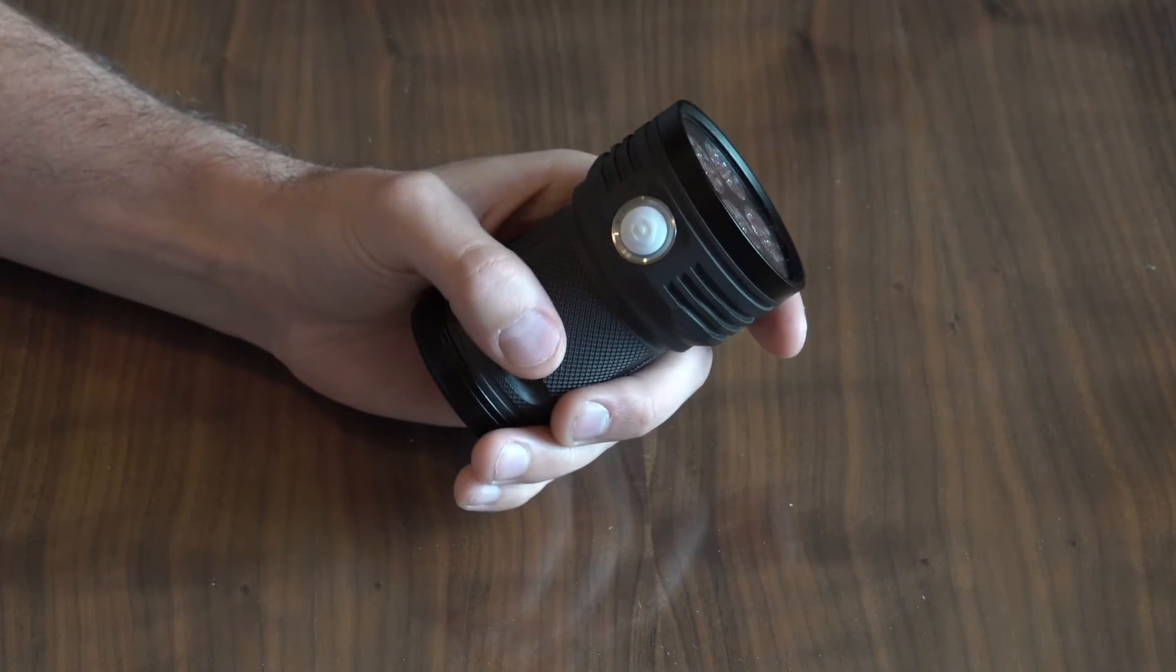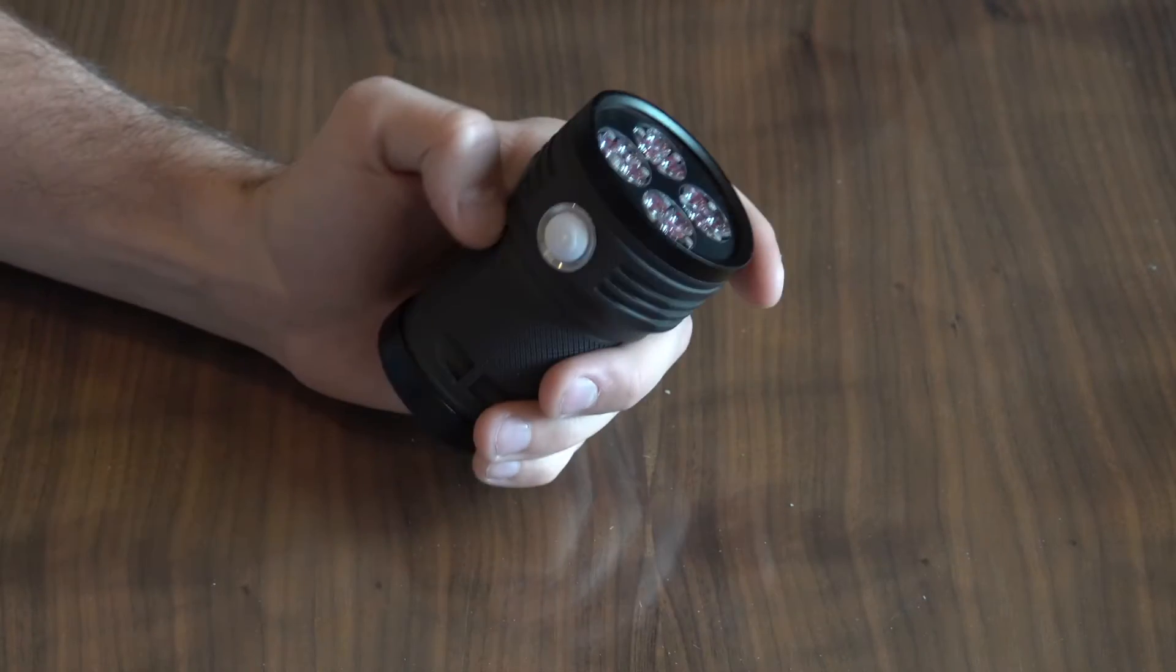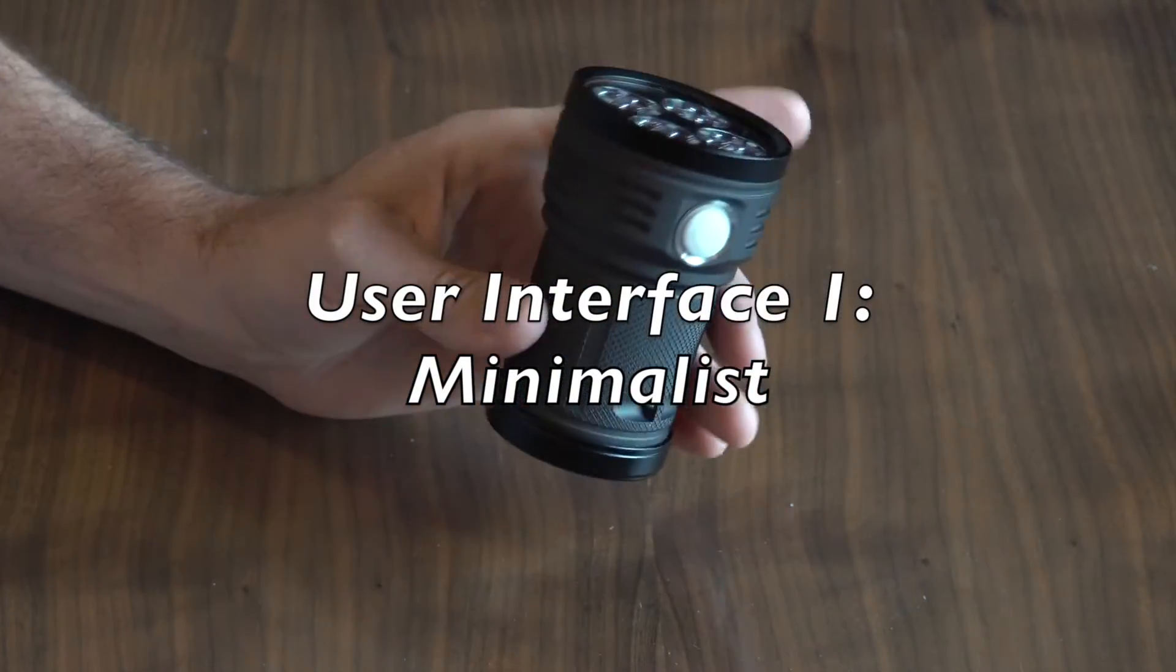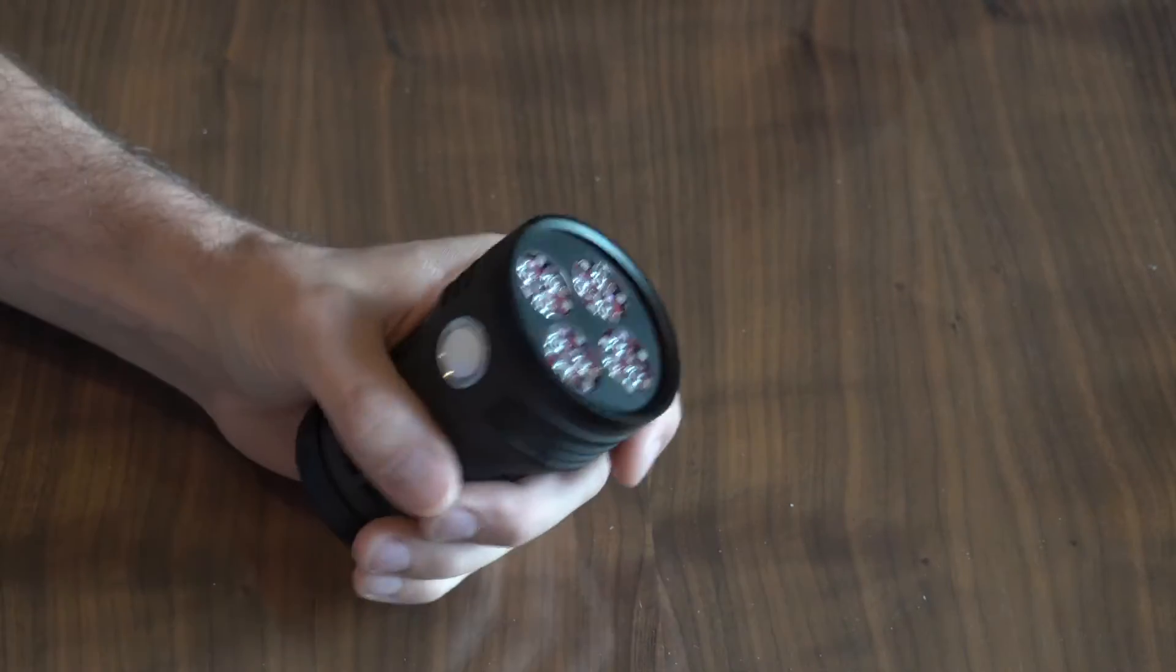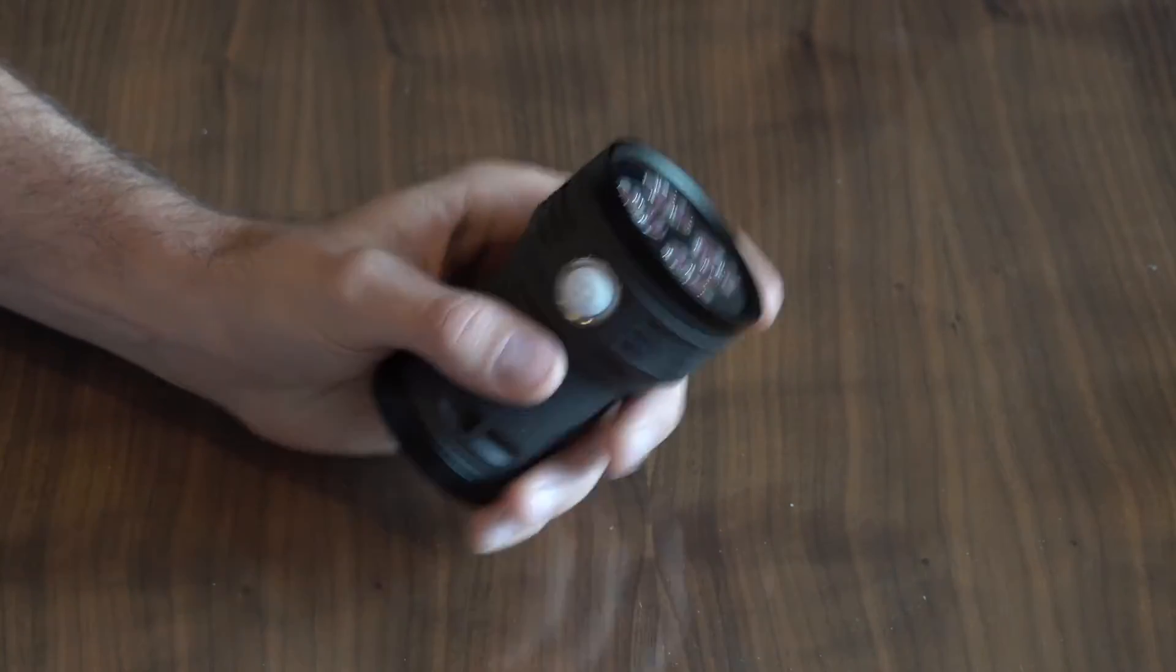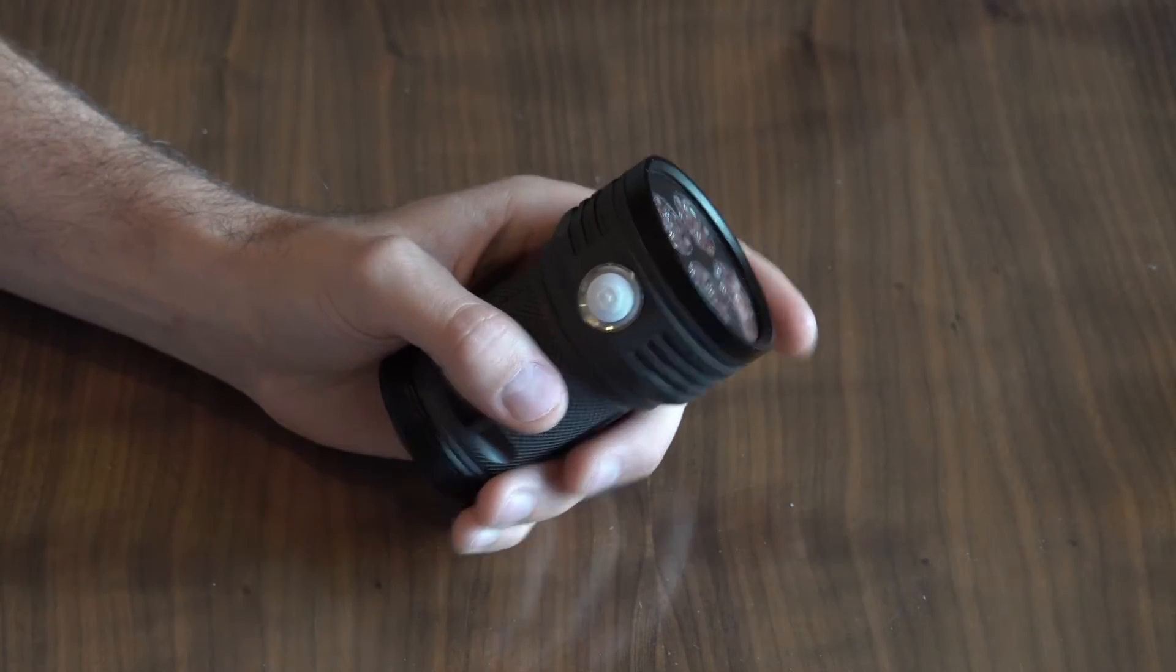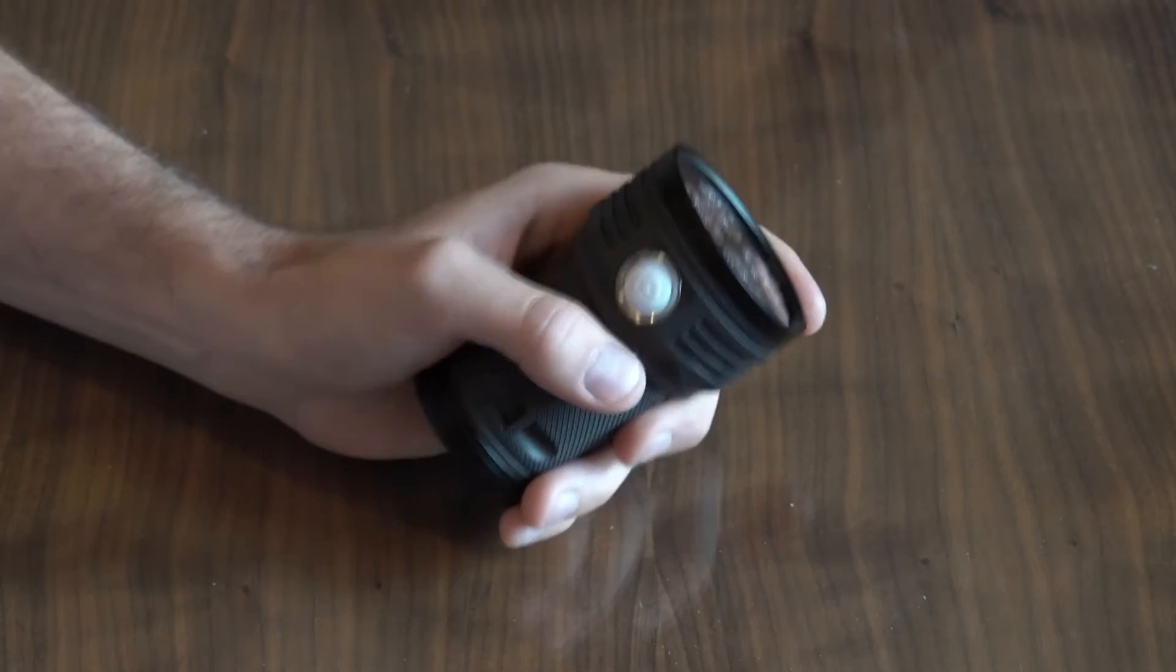Now the next thing I'd like to talk about are the three main user interfaces on the Meteor. The first one is called Minimalist. Now this is probably the most simple and the one that I usually ship the light with. Now how you enter into that user interface if you weren't in it or if you wanted to get back to it is to give nine clicks and then hold.